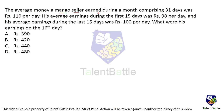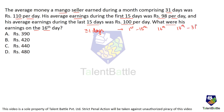The average money a mango seller earned during a month of 31 days was ₹110 per day. His average earnings during the first 15 days was ₹98 per day, and his average earnings during the last 15 days was ₹100 per day. We need to find his earnings on the 16th day. Let the income on the 16th day be x.